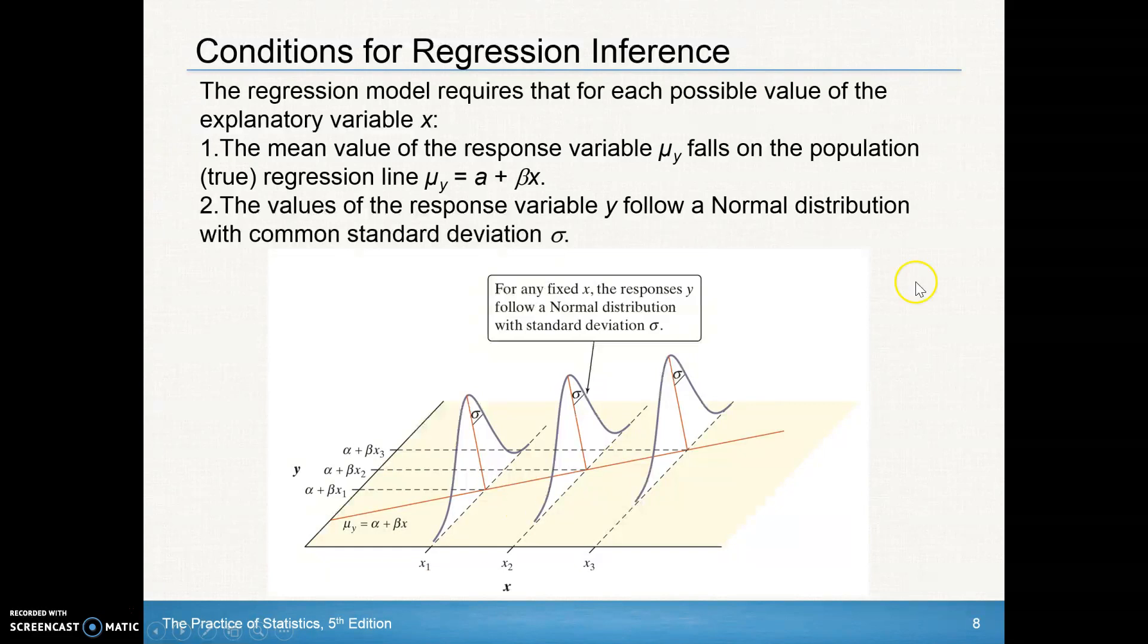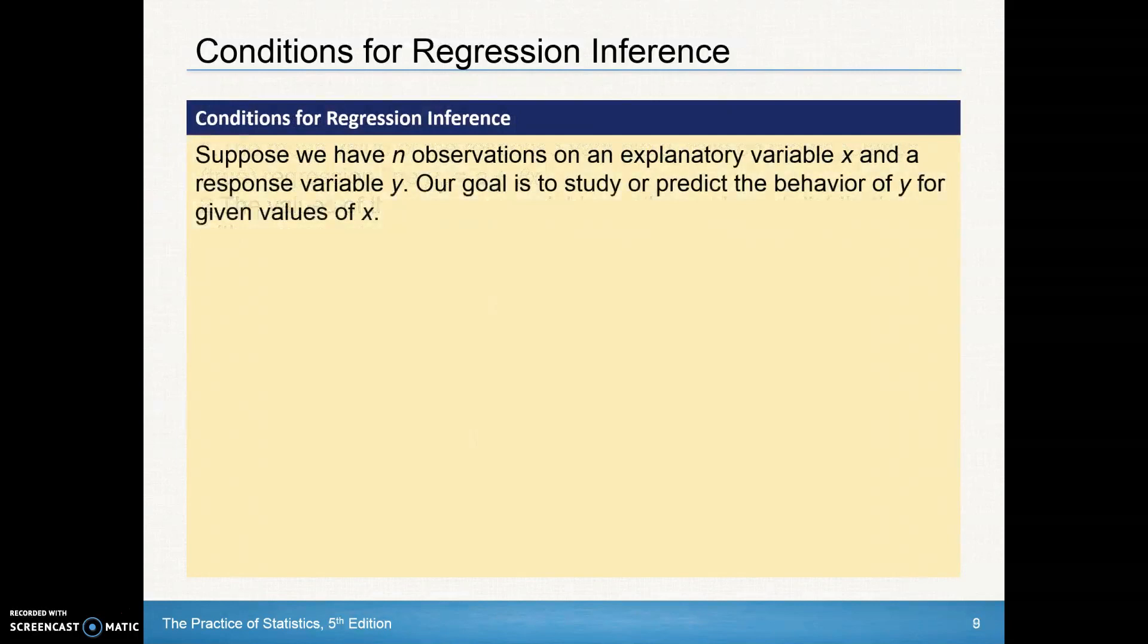So conditions for the regression inference. The regression model requires that for each possible value of the explanatory variable X, the mean value of the response variable, mean of the Ys, falls on the population regression line. So when we take each of our different values of X, they'll follow what that population, people may have different samples as they go through, but each value of that X, for each value of that X, the mean value, the mean Y value would fall on our regression line. The value of the response variable Y follow a normal distribution with common standard deviation of sigma. So each of the individual values of the response value, we'll have a little bit of a spread on each of those, but again, that mean should follow right on our predicted regression line.